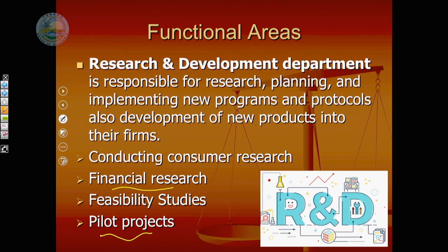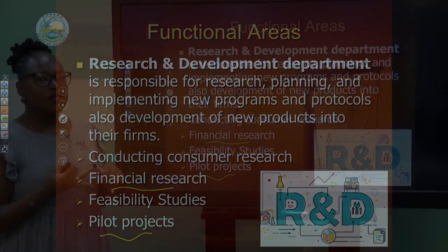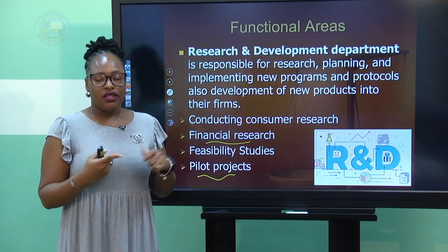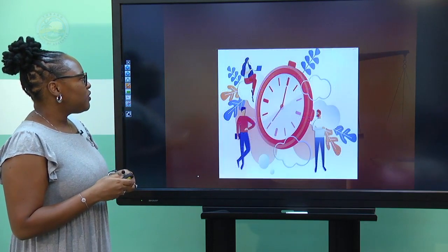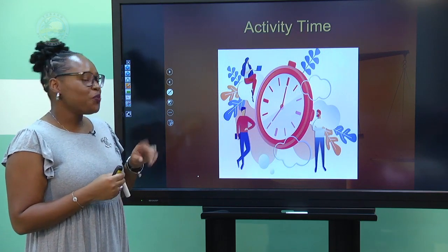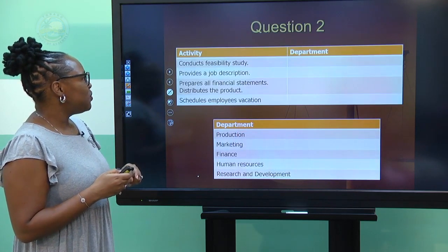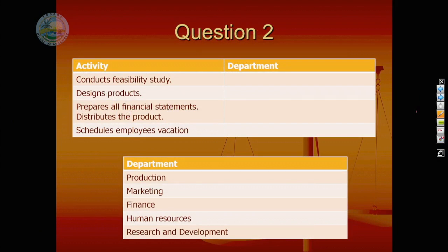Let's make a recap. The five functional areas are: production, marketing, finance, human resources, and research and development. Activity number two: match the activity to the department. Conducts feasibility study — research and development. Designs products — production department. Prepares all financial statements — finance, including balance sheets, profit and loss, and income statements. Distributes the products — marketing, which also deals with the four P's of marketing. Schedules employees' vacation — HR.